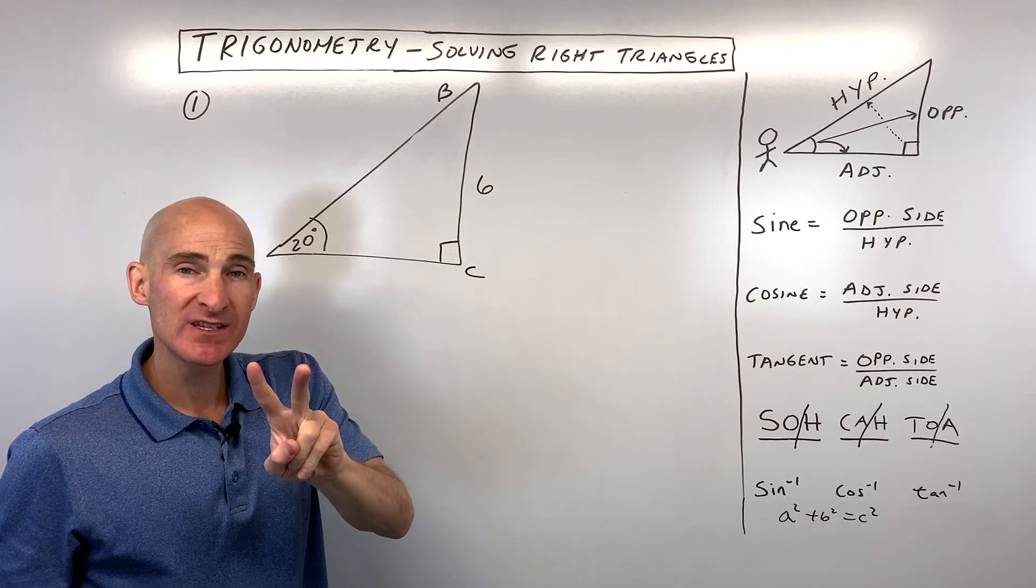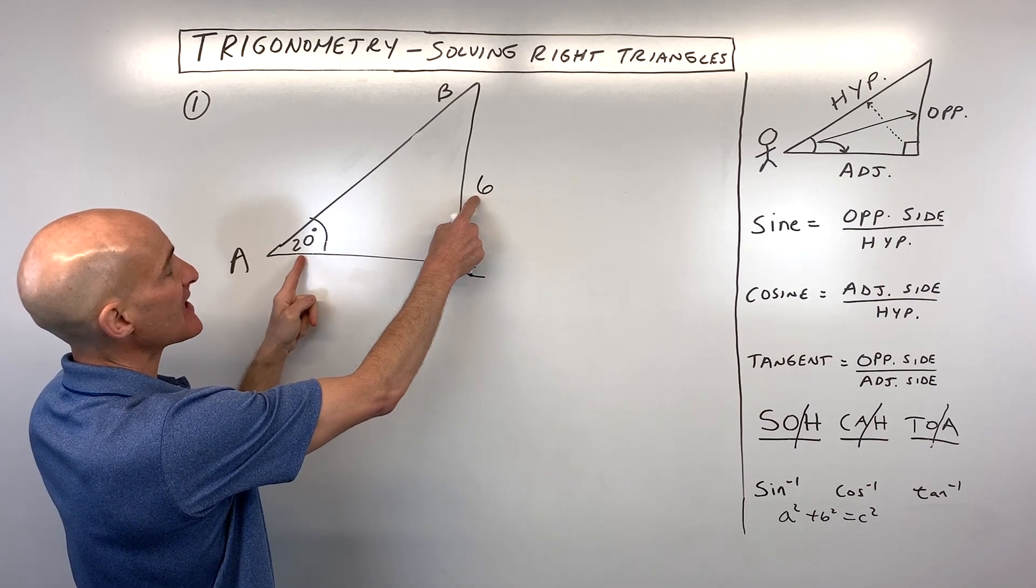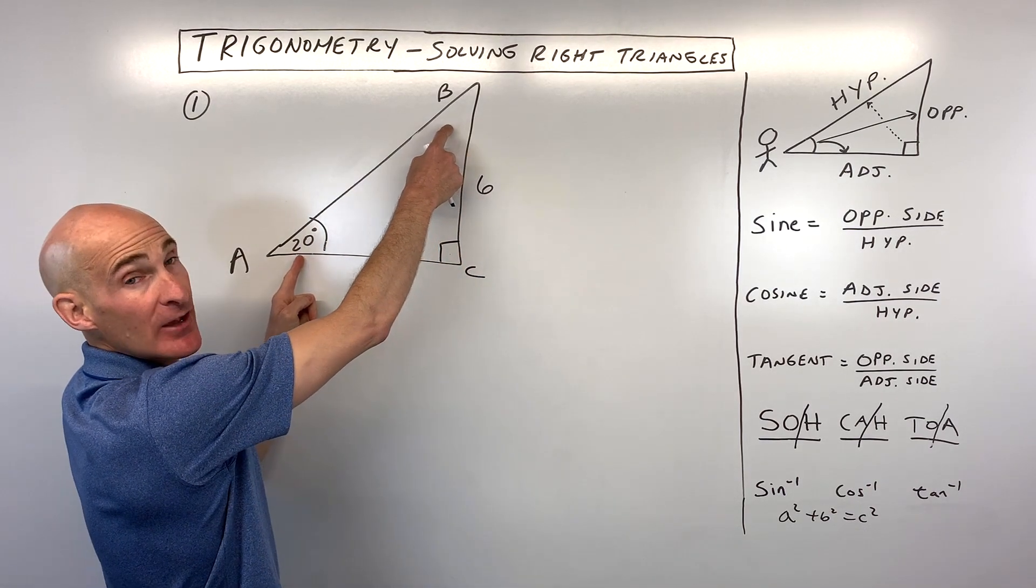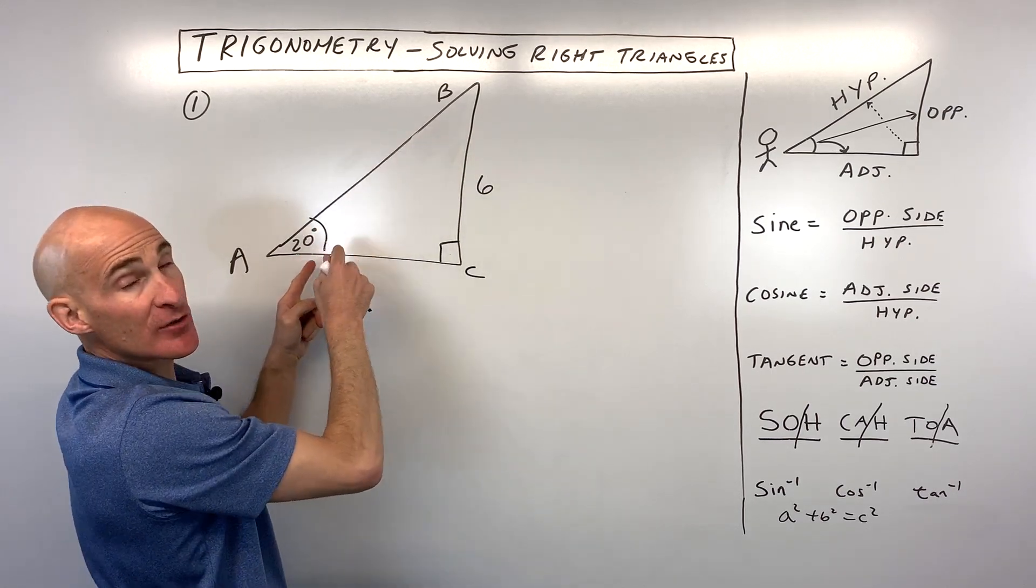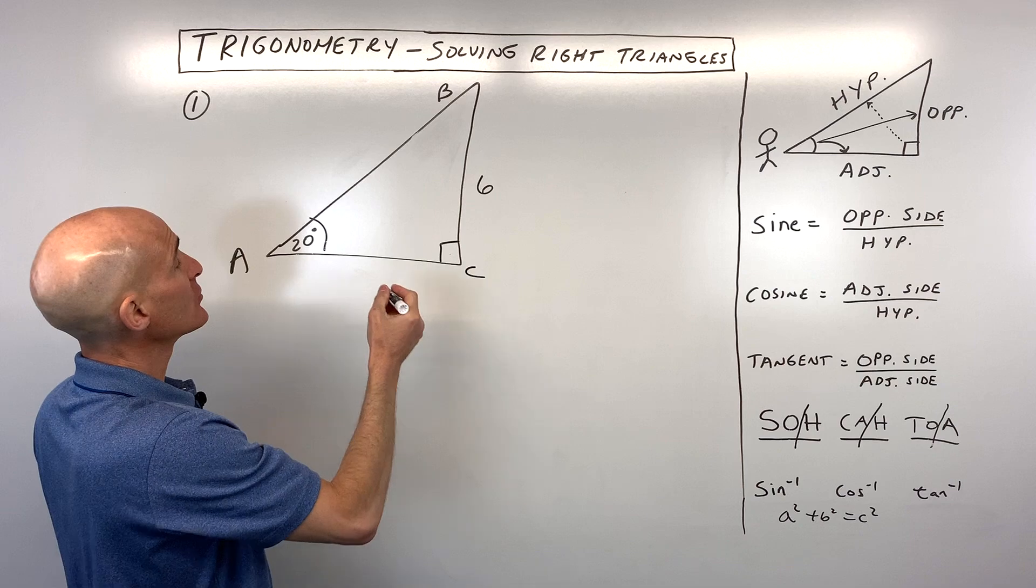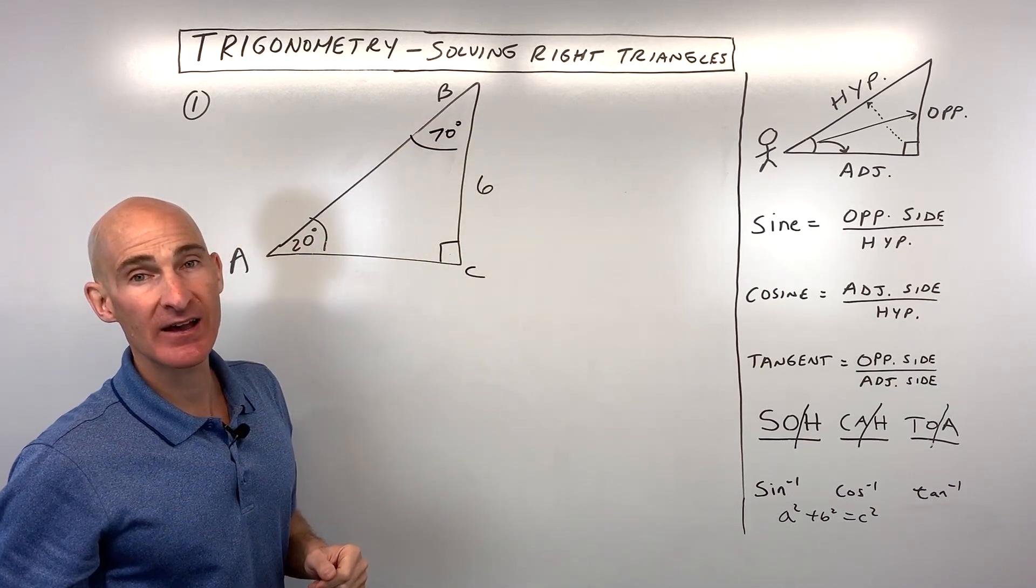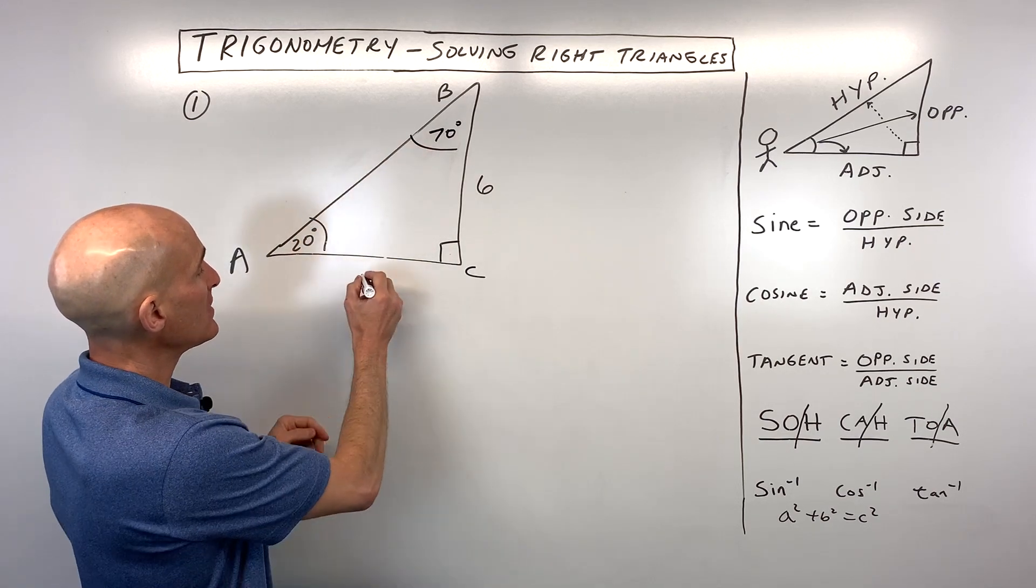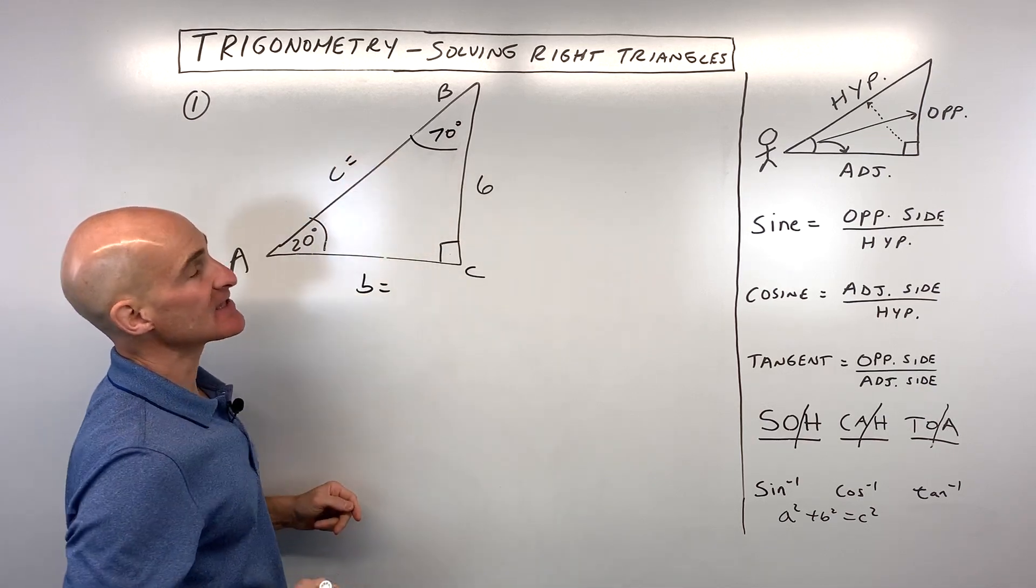We're going to go through two examples, and the first example we're given 20 degrees and side 6. So the first thing I'd probably do here is solve for this missing angle B. We know that these two acute angles are going to be complementary. They add up to 90 degrees. So if this is 20, we automatically know that angle B is 70. That was pretty easy. But now how do we find out the side across from angle B, which is side B, and the side across from angle C, which is side C?